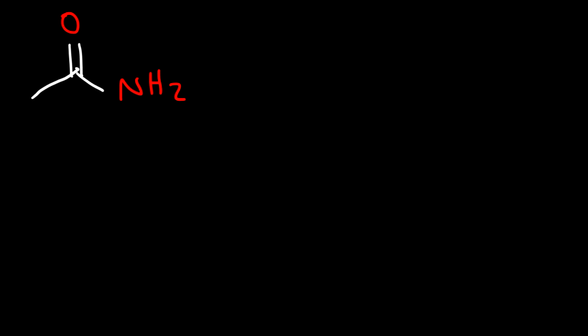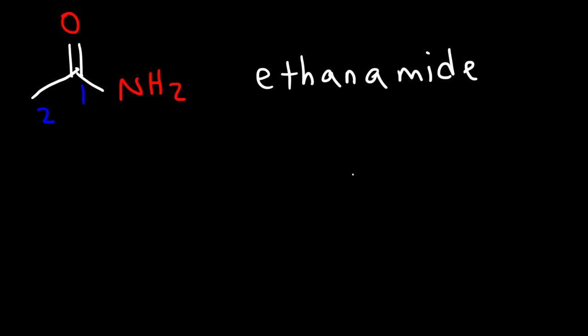In this lesson we're going to talk about how to name amides. Let's start with a very simple example: a two-carbon amide. Two carbons is associated with the name ethane, but when dealing with amides you need to drop the E and add the word amide, so this is called ethanamide. The common name for this is acetamide, which you might see in your organic chemistry textbooks.